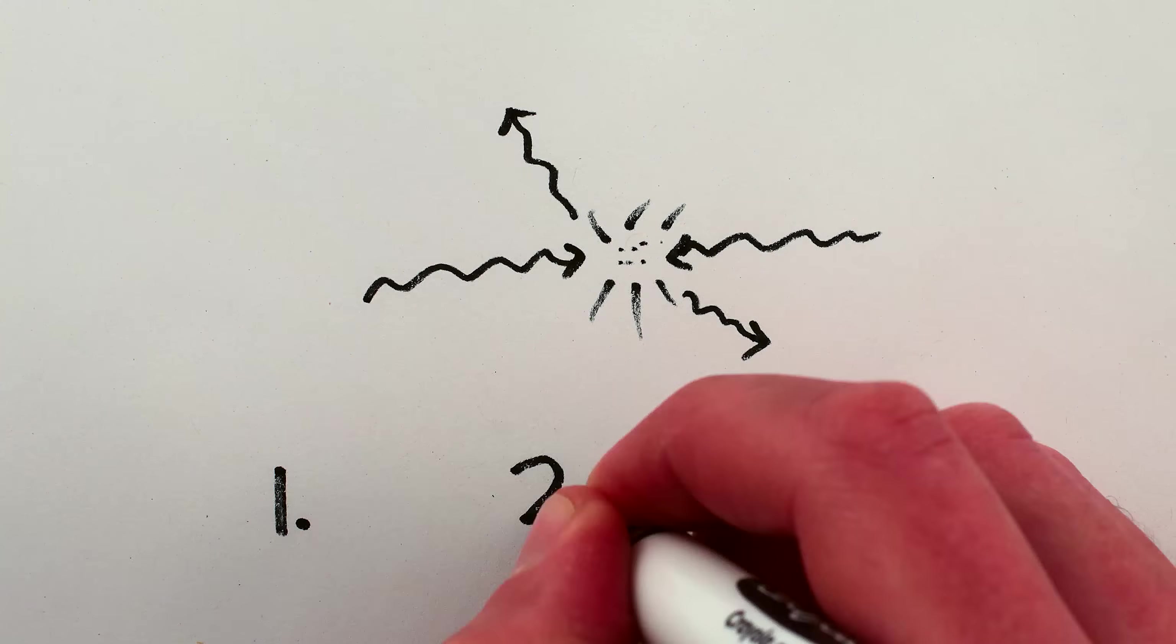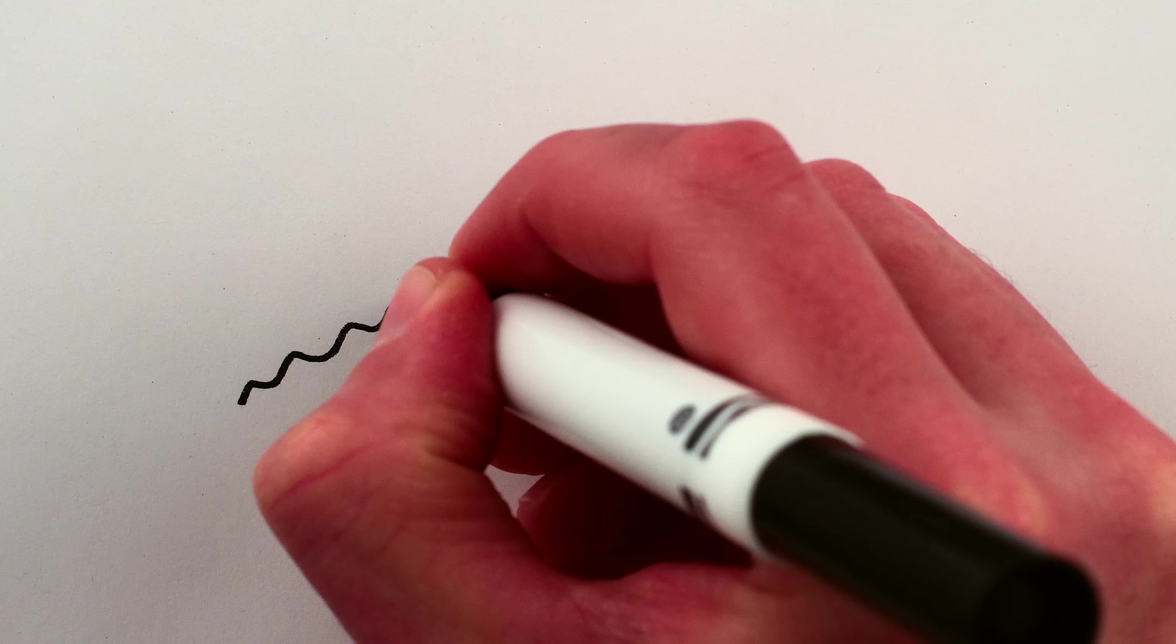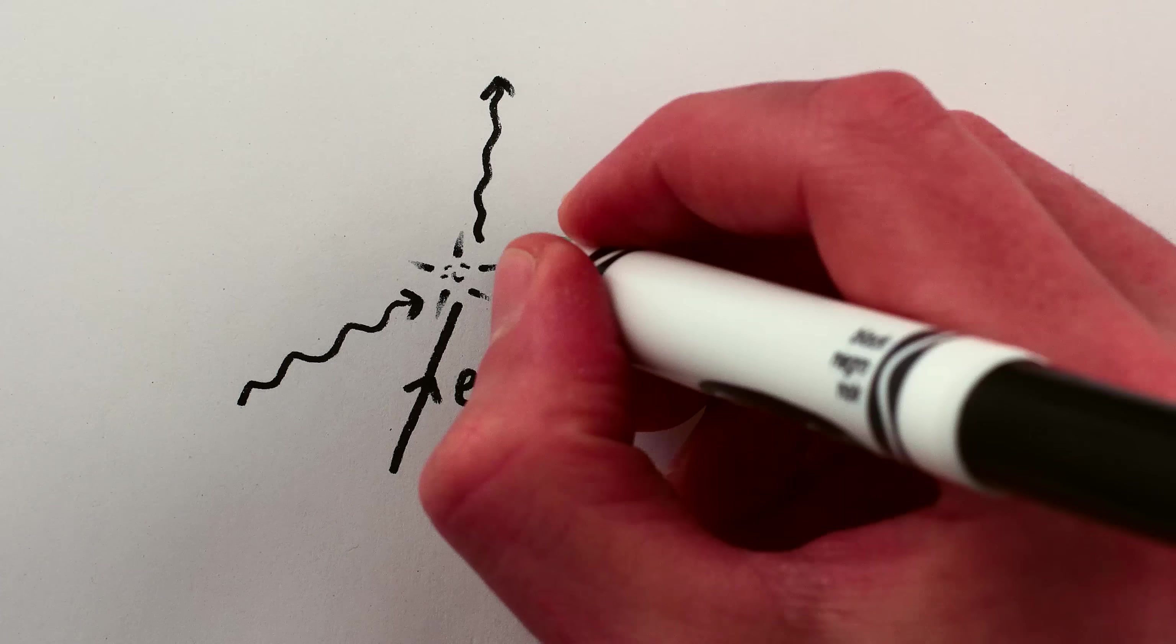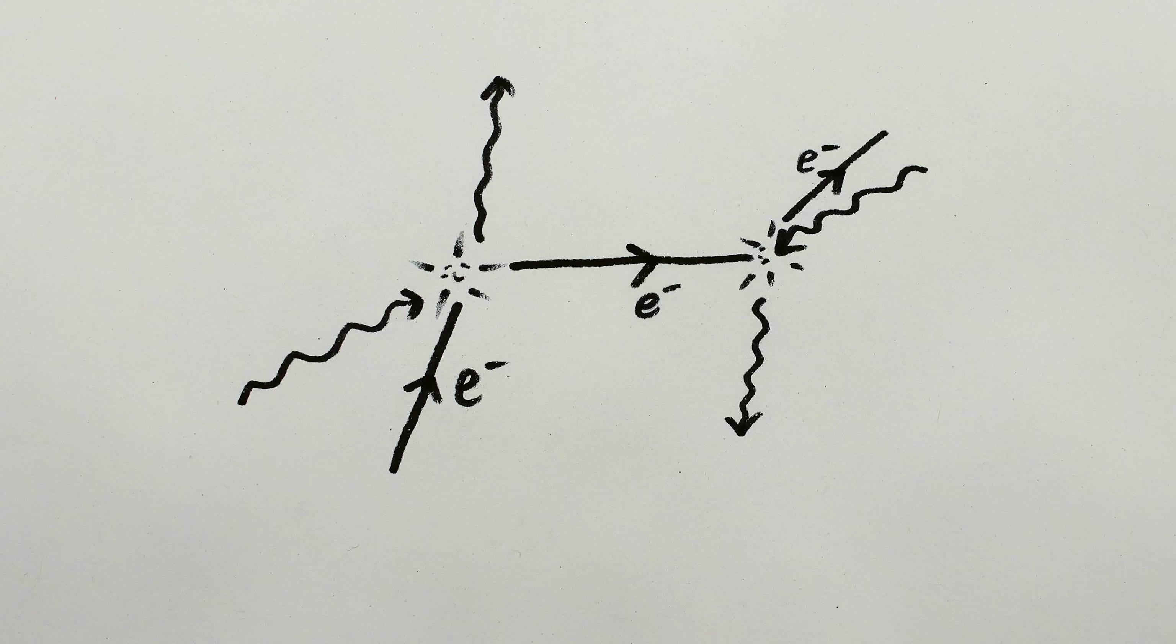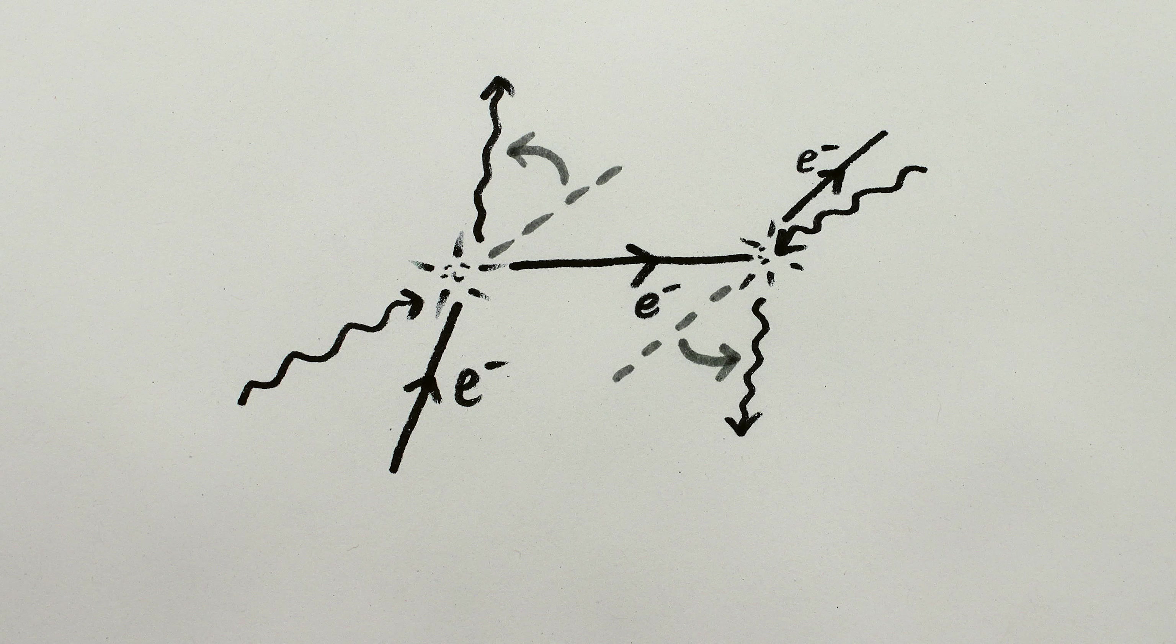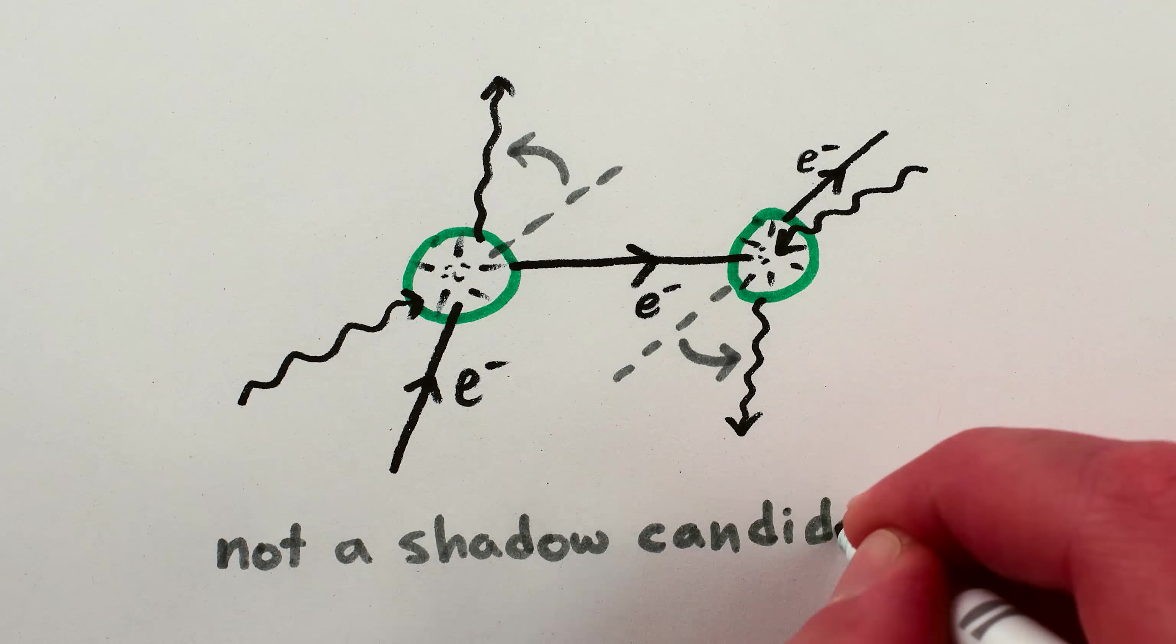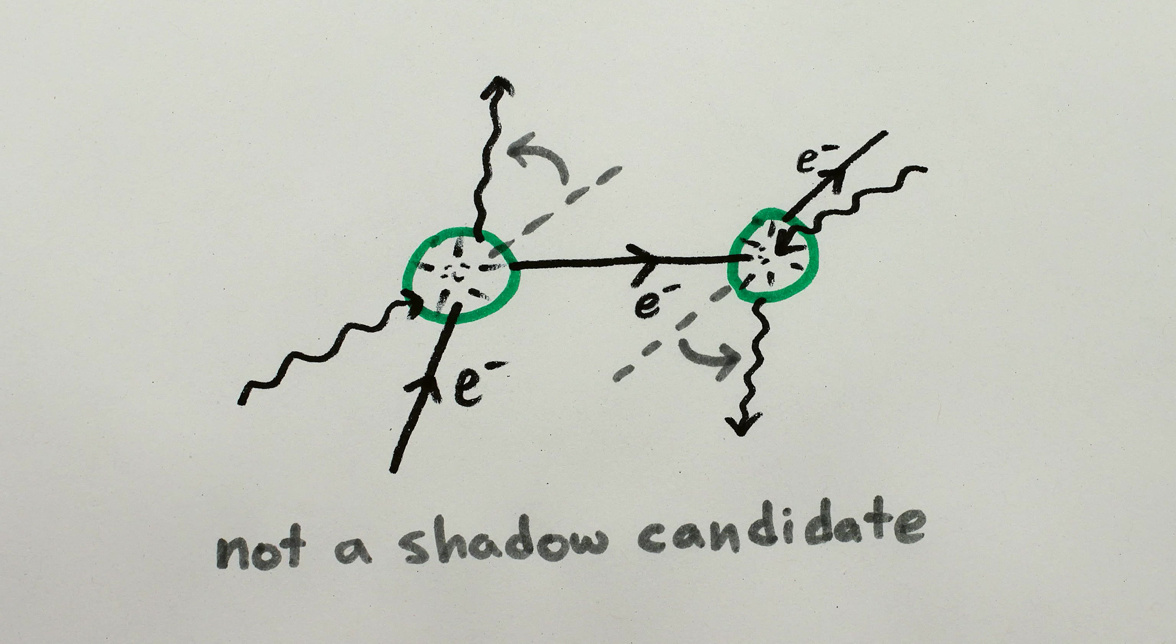However, there are three indirect ways that photons can interact with other photons. First, if a photon bumps into, say, an electron, and that electron bumps into another photon, the photons will technically have redirected each other. But this requires an electron to be in just the right place at the right time, so I don't think it really counts as a way for a photon by itself to make a shadow.